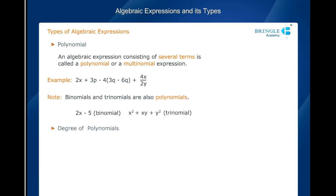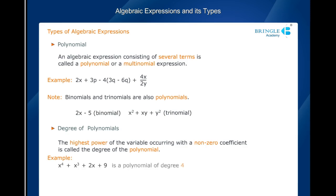Degree of polynomials: The highest power of the variable occurring with a non-zero coefficient is called the degree of the polynomial. For example, x⁴ + x³ + 2x + 9 is a polynomial of degree 4.